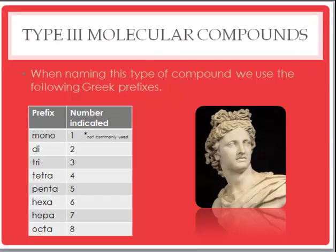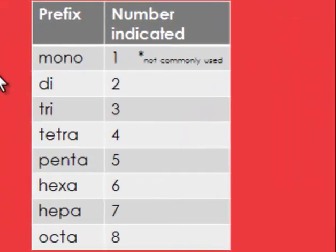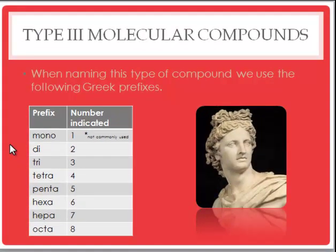How do we name these types of compounds? We use the Greek prefixes to name the number of each type of atom: mono for one, di for two, tri for three, etc. We're not concerned with ions or charges in this naming system — just naming each element and using a prefix to say how many of each we have.